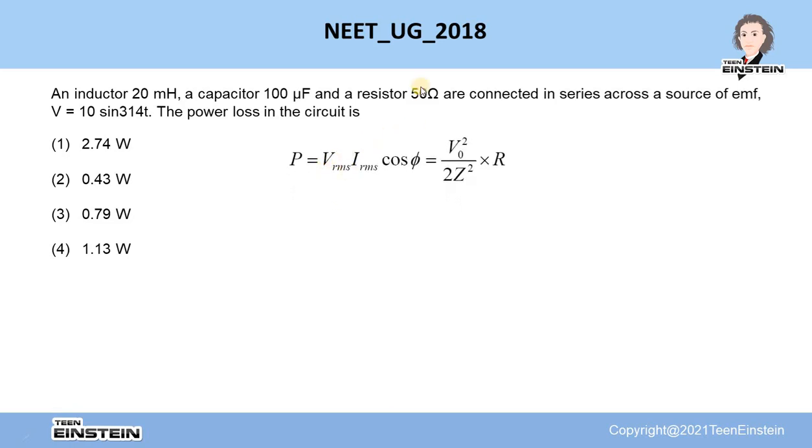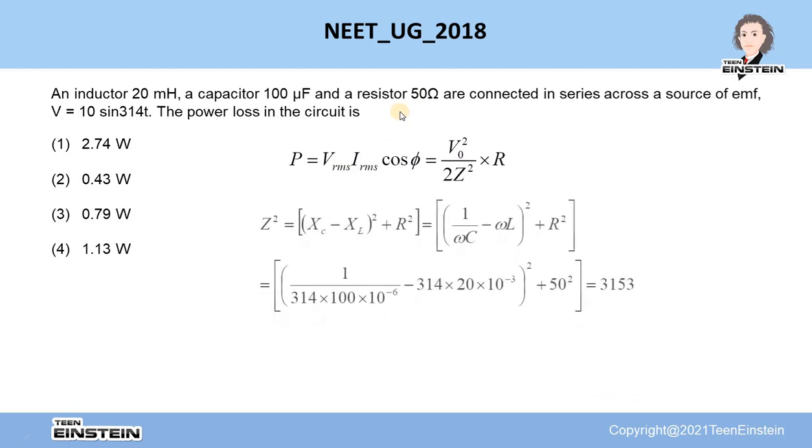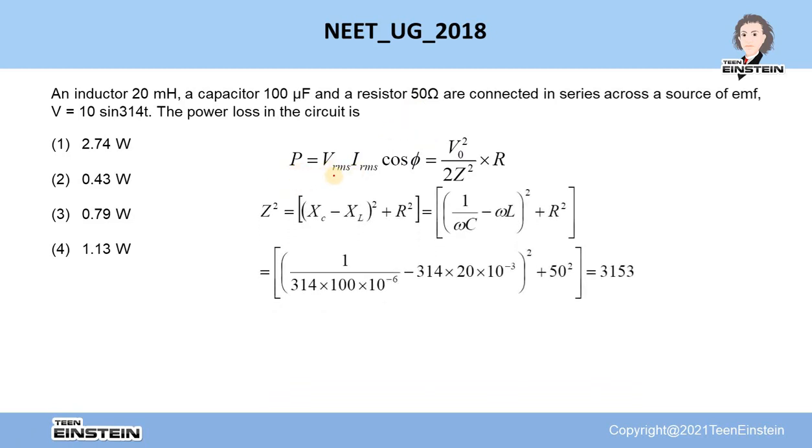The power is V_RMS × I_RMS × cos(φ). In terms of peak voltage and in terms of resistance and impedance, I_RMS can be written as V_RMS/Z. In terms of peak value, we can write V_RMS = V₀/√2, and cos(φ) can be written as R/Z, where Z is the impedance of the LCR series circuit.